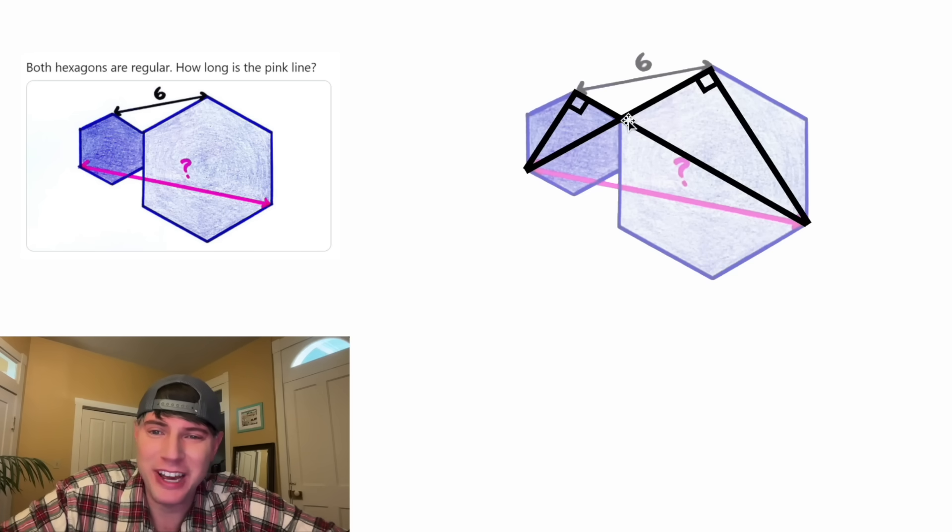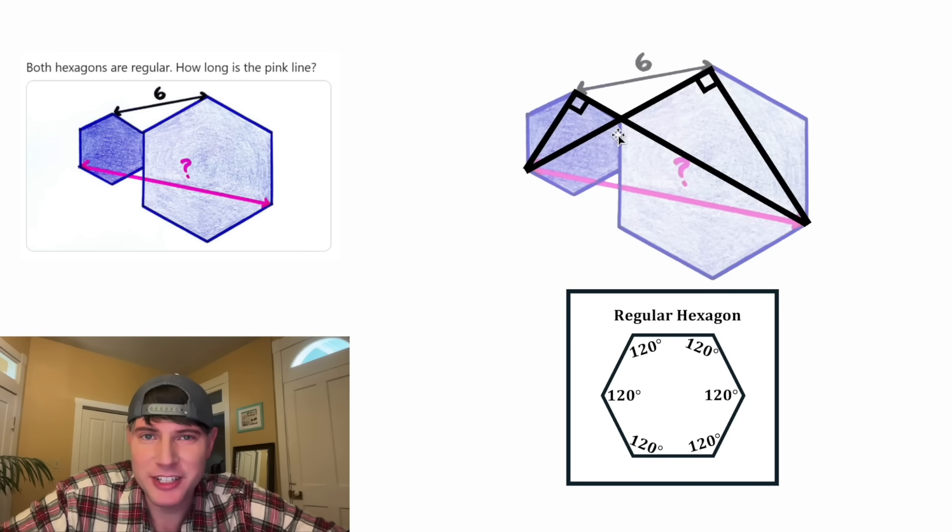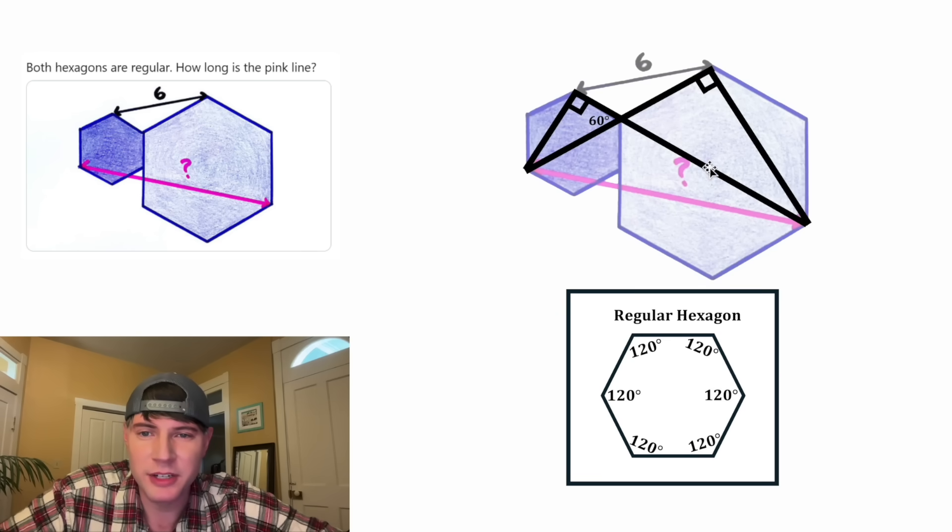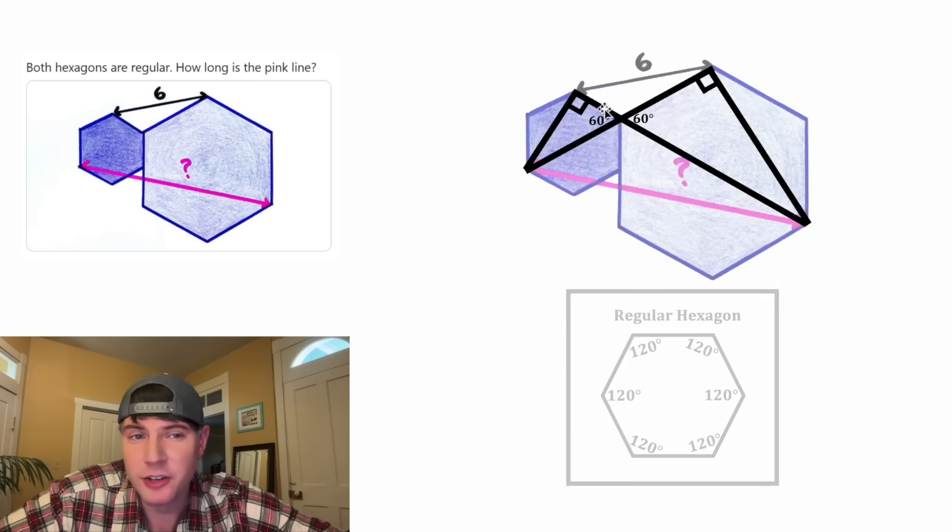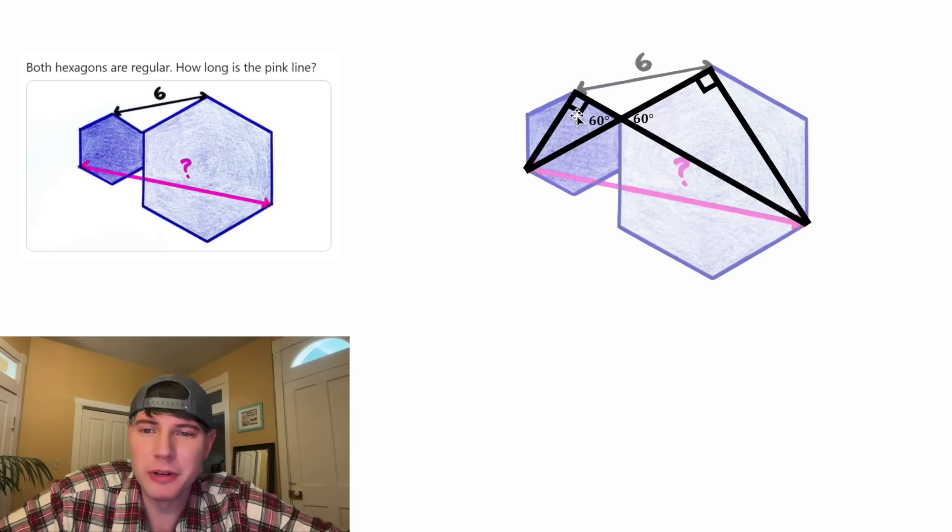And then once again, using the fact these are regular hexagons, this line would bisect this angle. Each angle in a regular hexagon is 120 degrees, which means this half would be 60 degrees. And then for the same reason, this one is also 60 degrees. And they're also vertical angles. In this triangle, we have 90 degrees and 60 degrees, so the last angle has to be 30 degrees. And same thing for this triangle, this has to be 30 degrees. So now we have two nice looking 30, 60, 90 triangles.